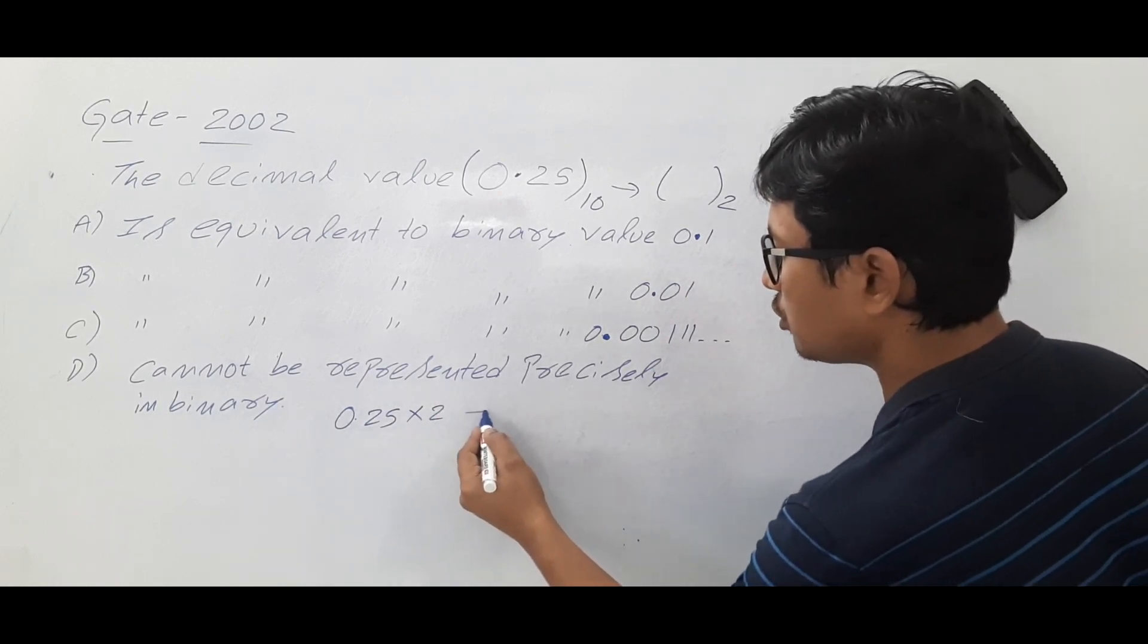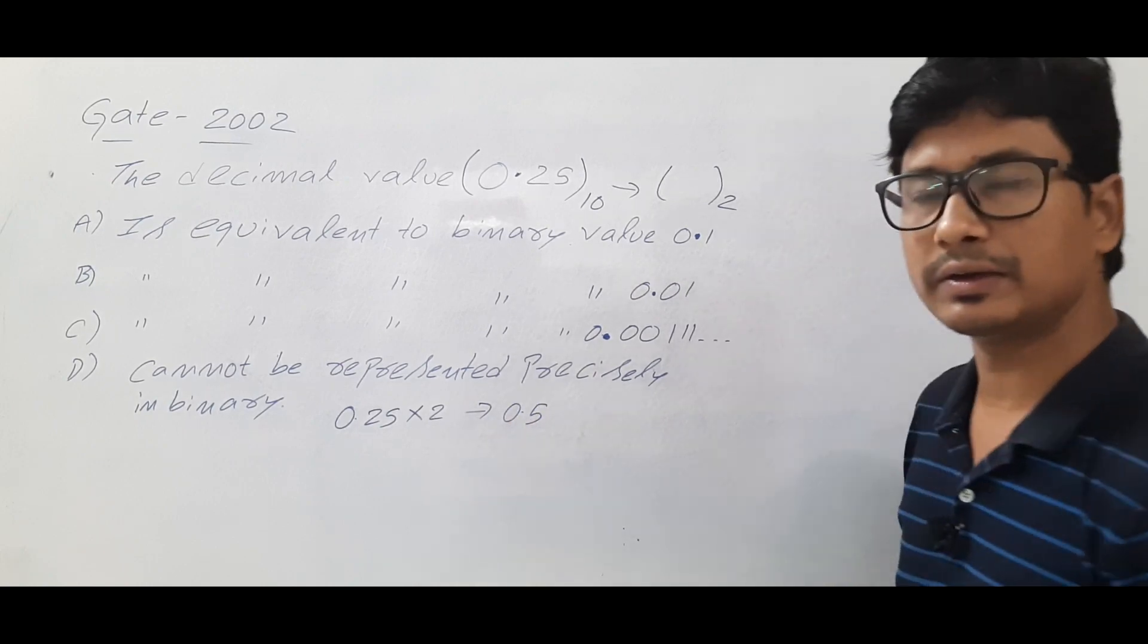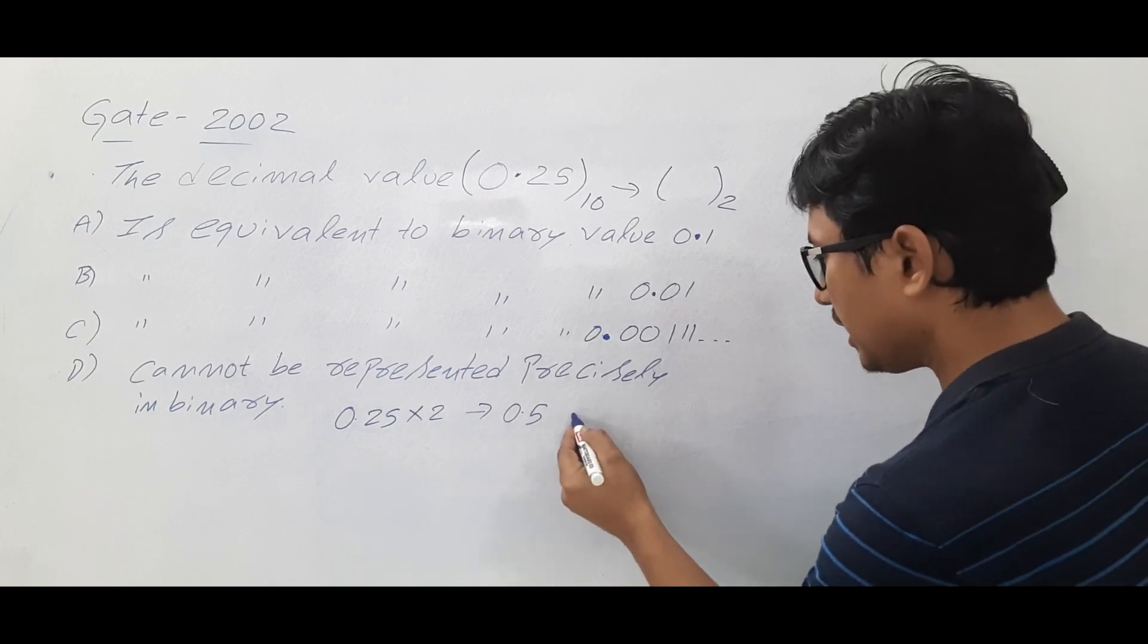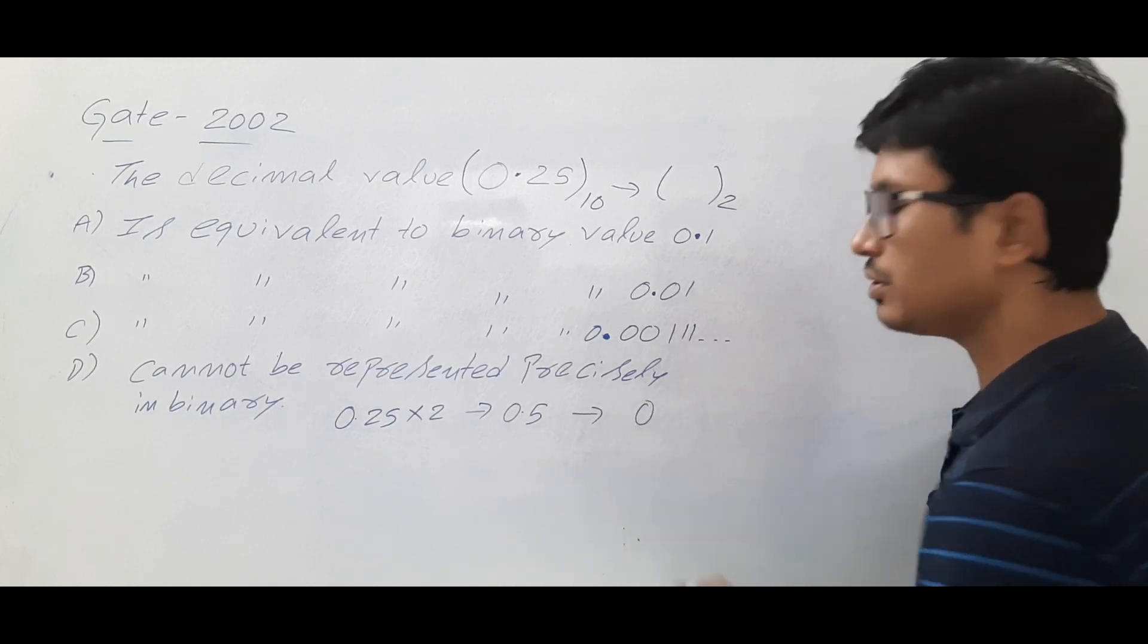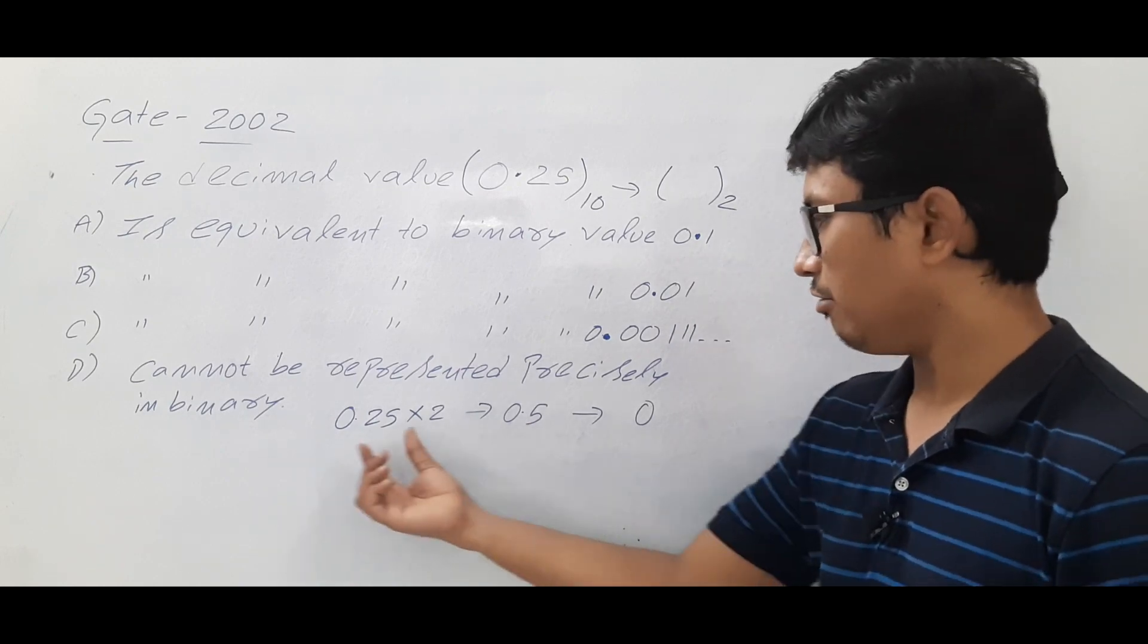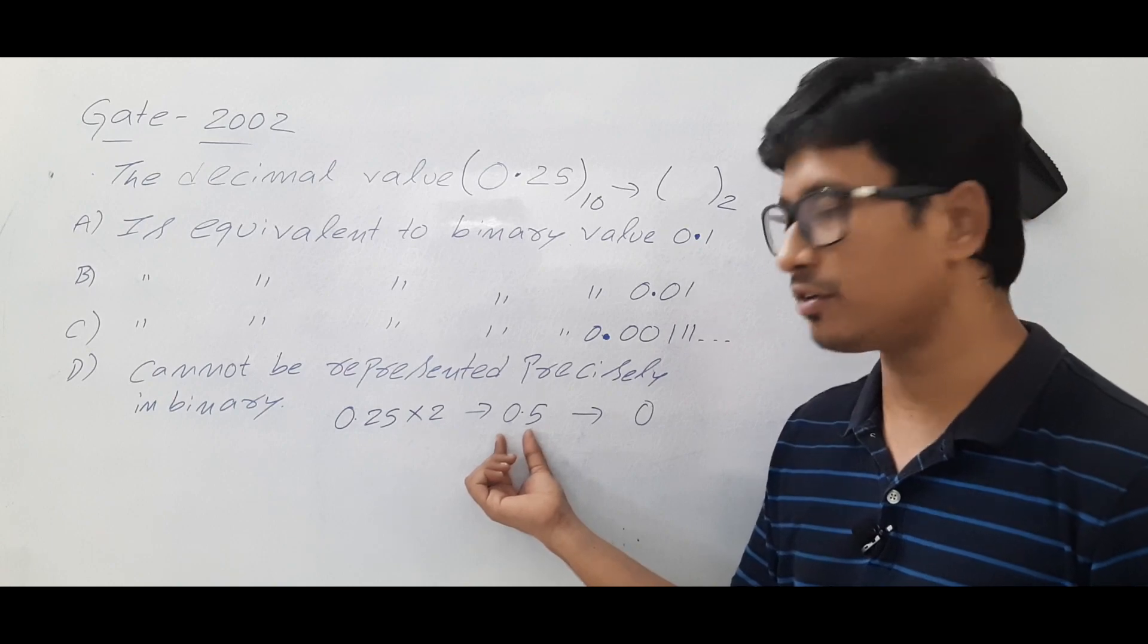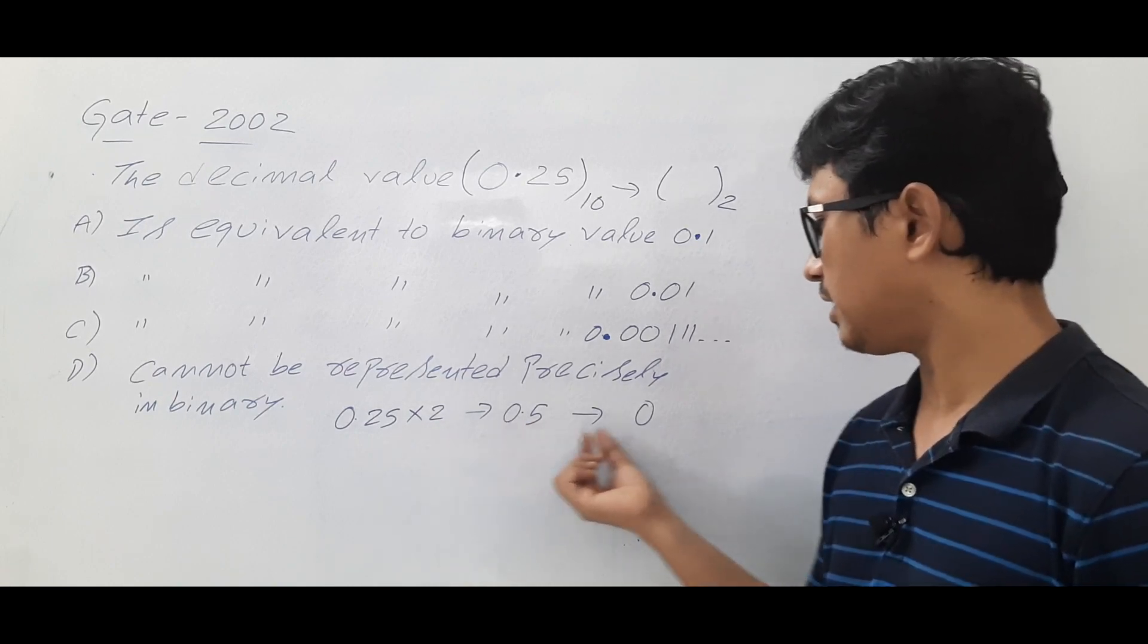If I multiply 0.25 into 2, I will get 0.5. So if you get 0.5, you keep the 0 here. When you are multiplying 0.25 into 2, you will get 0.5. Take this part and keep it here.